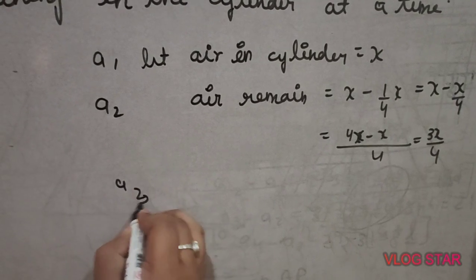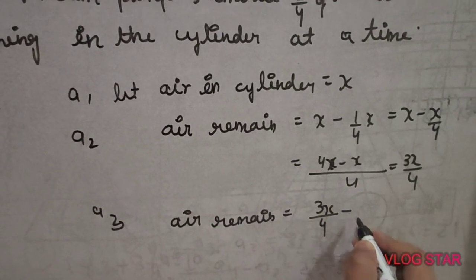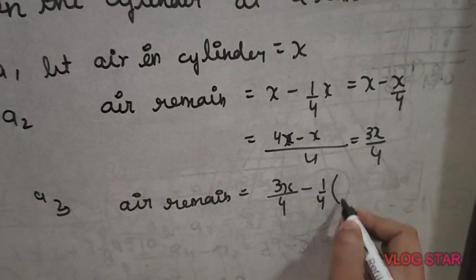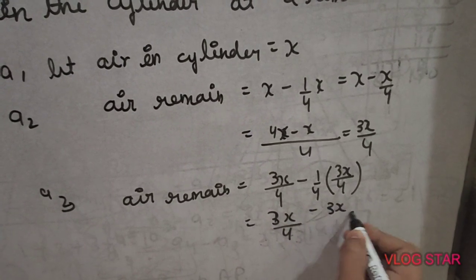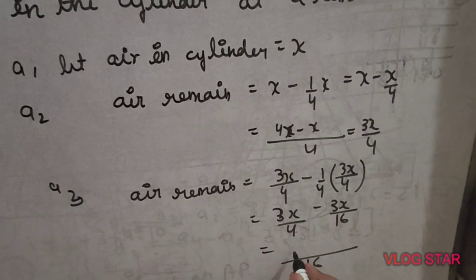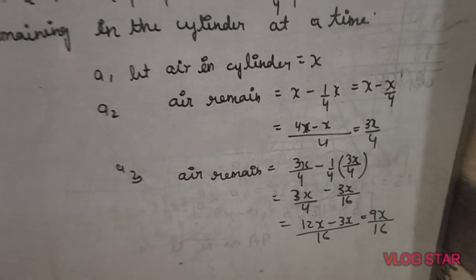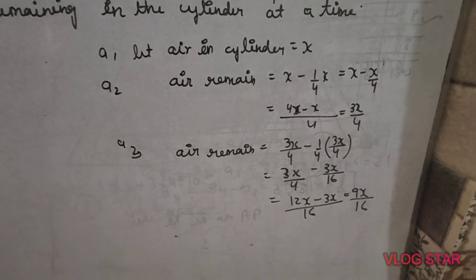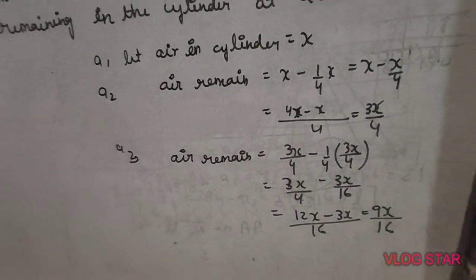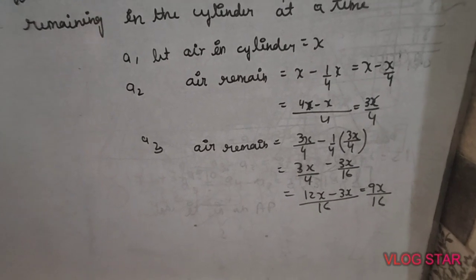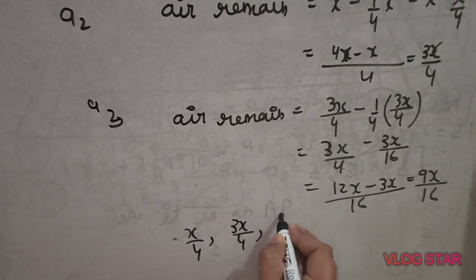For the third term: air remaining was 3x/4, then one-fourth of that is removed. So A3 = 3x/4 − (1/4)(3x/4) = 3x/4 − 3x/16. Taking LCM as 16: = 12x/16 − 3x/16 = 9x/16. So the series is x, 3x/4, 9x/16.